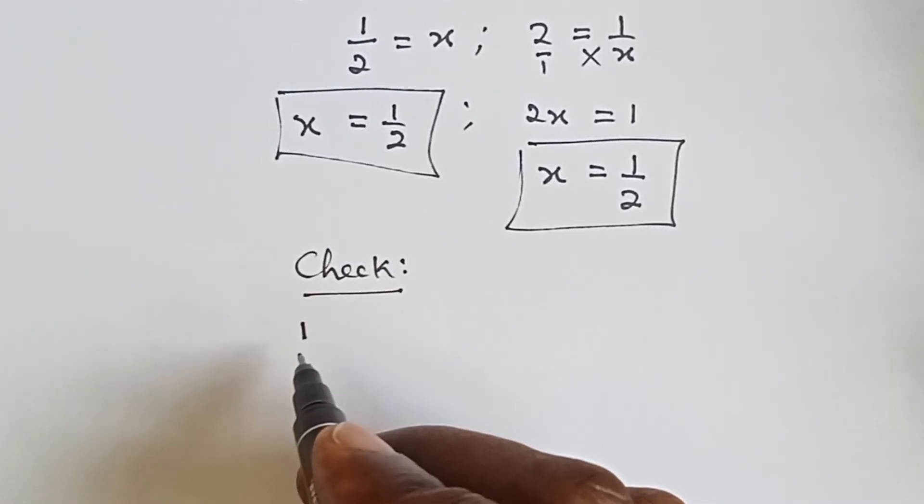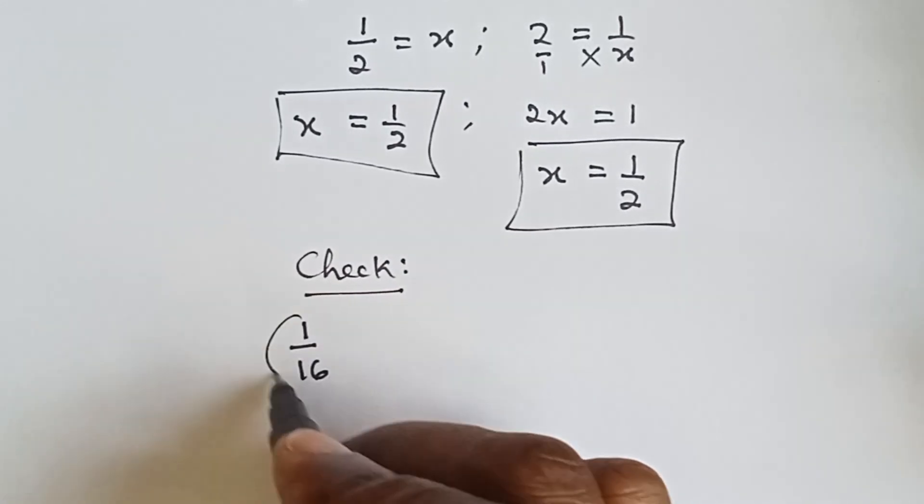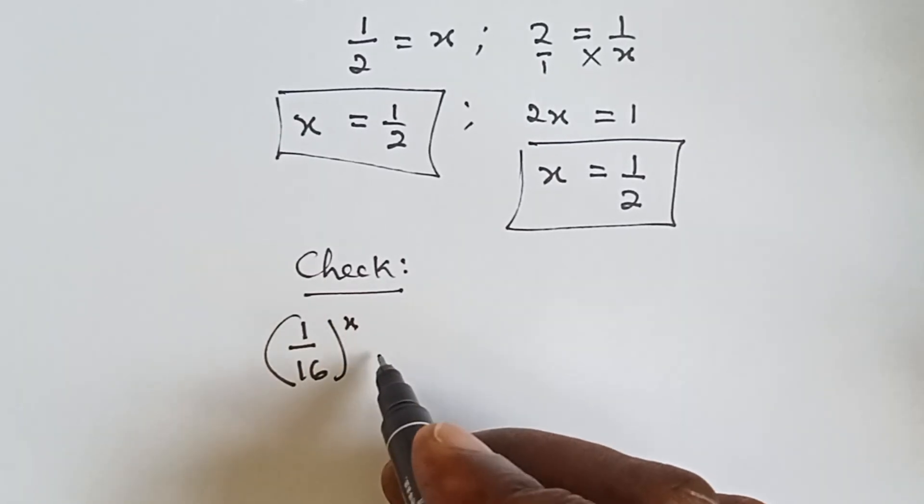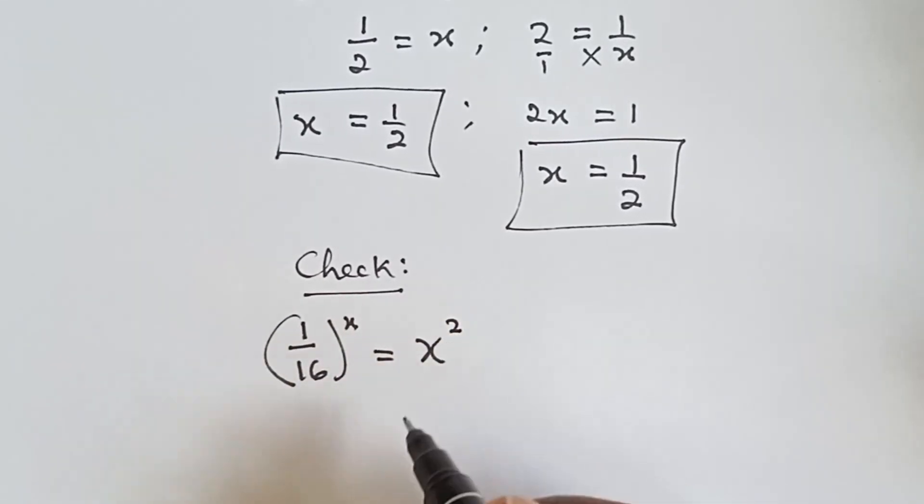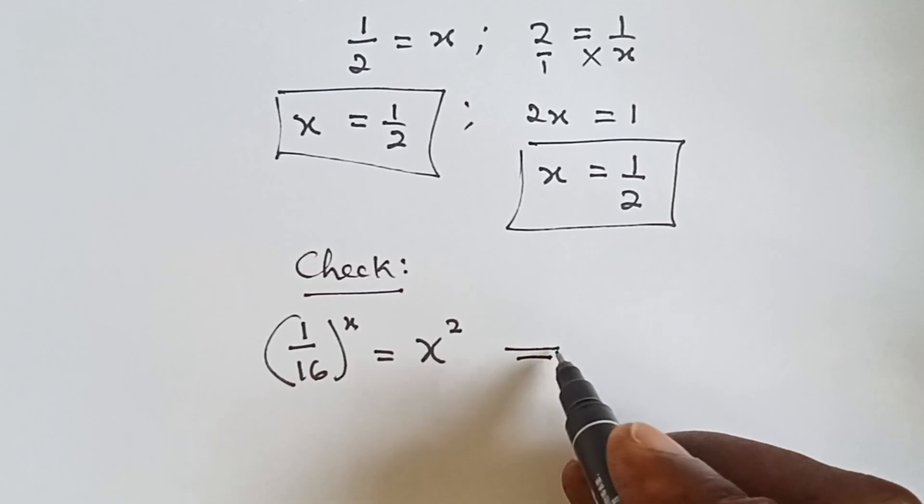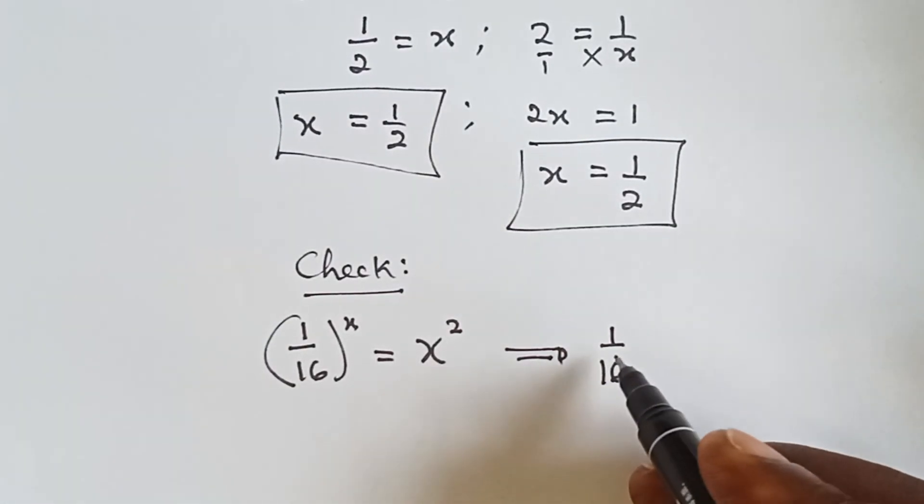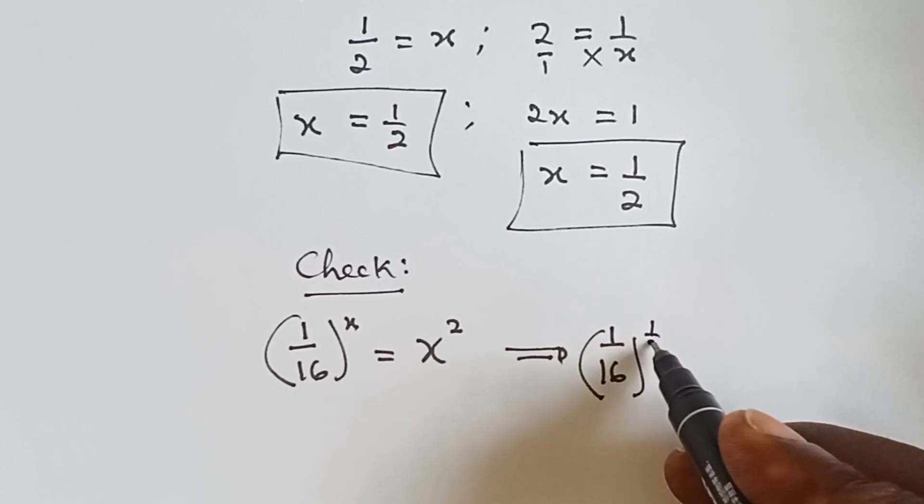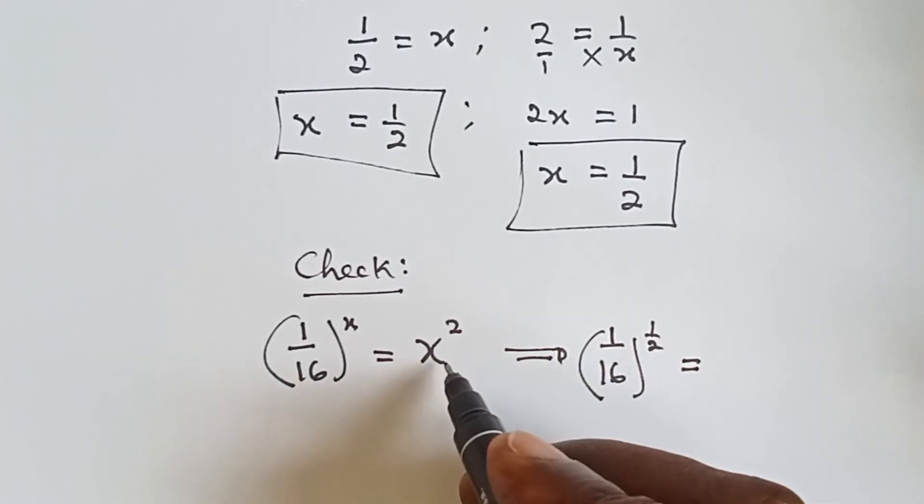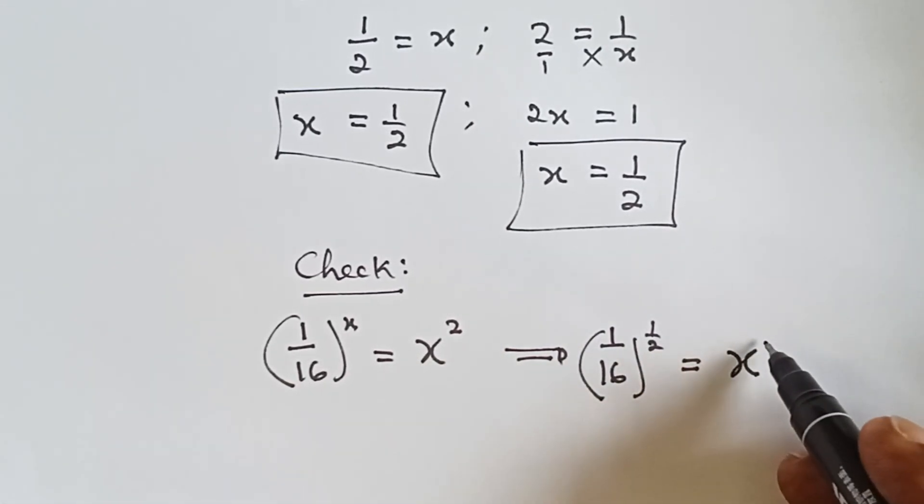Let's check. Now we have 1 over 16 raised to power x equals to x squared. Okay, so now what is our x? Our x is 1 over 2. So we have 1 over 16 raised to power 1 over 2 equals to x squared.